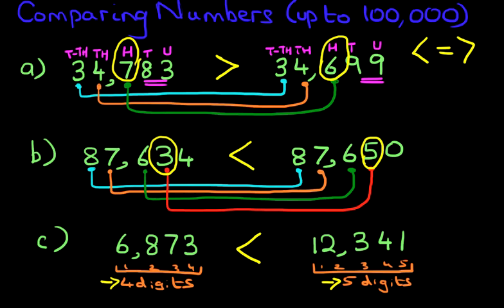And that is how we compare numbers up to 100,000. Very methodically — start on the left-hand side. First, check how many digits there are, then start on the left-hand side and gradually work your way across.